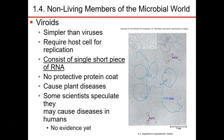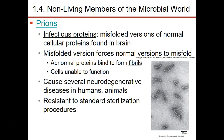Viroids are much simpler than viruses — they only have RNA and tend to only cause problems with plants. We haven't found yet that any cause problems with humans, but they can cause some plant diseases. Prions are proteins that are folded abnormally, and these abnormally folded proteins can cause other proteins to fold abnormally as well. An example of a prion disease is mad cow disease, probably the most famous. Prions can cause neurodegenerative diseases in humans as well as other animals, and they are very hard to destroy — typical sterilization procedures don't get rid of prions.